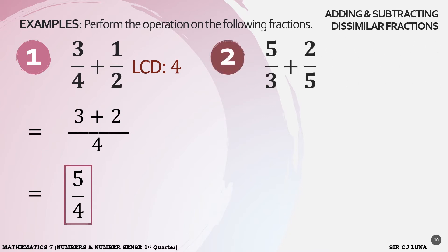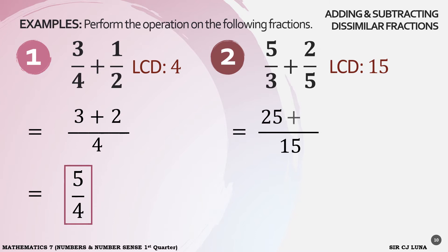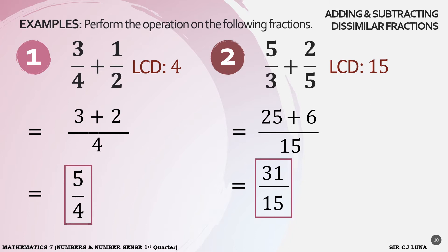Number 2. We have 5 over 3 plus 2 over 5. Again, we have to make our fractions similar. The LCD of 5 thirds and 2 fifths is 15. Now our denominator is 15. Divide 15 by the denominators and then multiply to the numerators. 15 divided by 3 is 5; 5 times 5 is 25. Plus: 15 divided by 5 is 3; 3 times 2 is 6. So 25 plus 6 is equal to 31 over 15. 31 over 15 is already in the lowest term, so this is our answer.